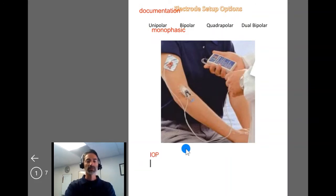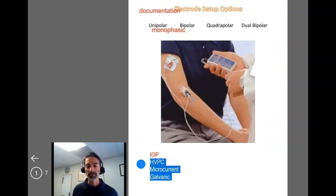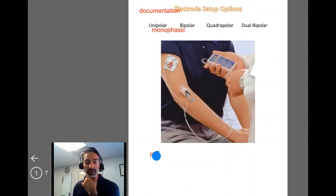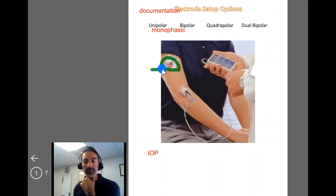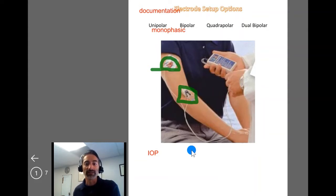Examples of a unipolar setup include iontophoresis, high volt pulsed current, and in some regards microcurrent. Galvanic with a continuous phase of direct current also qualifies. The one I would most highlight is iontophoresis — traditionally associated with a unipolar, monophasic setup. In these cases, it does matter which electrode is red for positive and which is black for negative, because that must match the medication underneath the electrode to repel the medicine into the tissue.